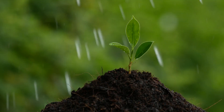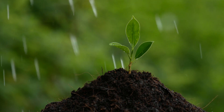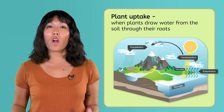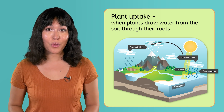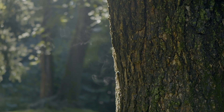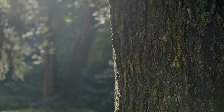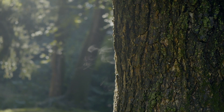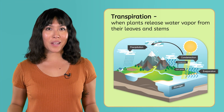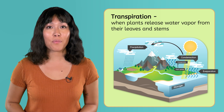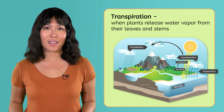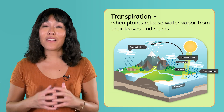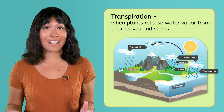There's also the water that falls on land. Some of it is absorbed during plant uptake, which is when plants draw water from the soil through their roots. Water doesn't stay in those plants forever, though. They return water to the water cycle through transpiration — when plants release water vapor from their leaves and stems. Transpired water vapor returns to the atmosphere, where it might eventually condense and precipitate again.